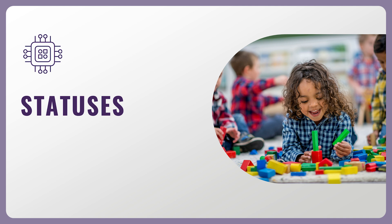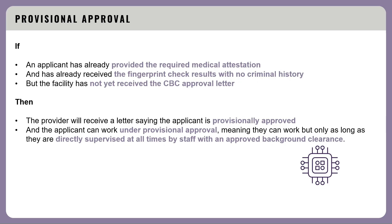As an individual works their way through the CBC process, the staff list will display their updated status. Let's talk about two statuses: Provisional Approval and Under Review. If an applicant has already provided the required medical attestation and has already received the fingerprint check results with no criminal history, but the facility has not yet received the CBC approval letter, then the individual is provisionally approved. The provider will receive a letter saying the applicant is provisionally approved, and the applicant can work under provisional approval.